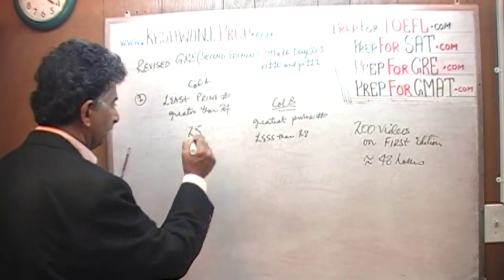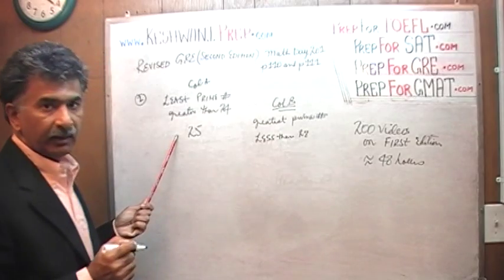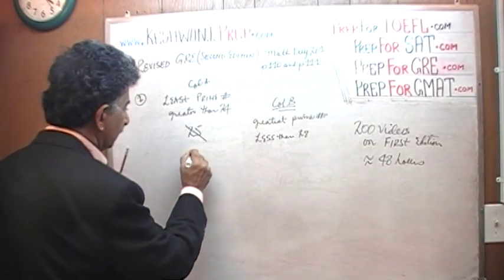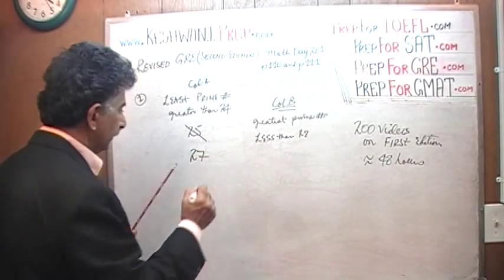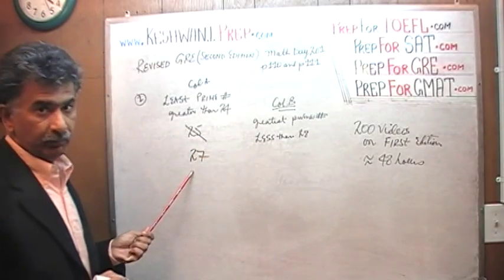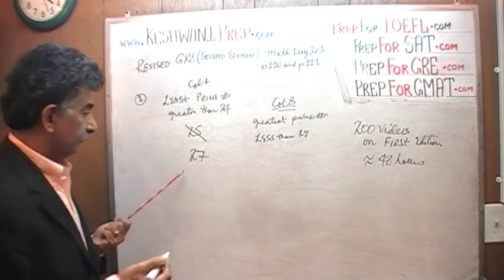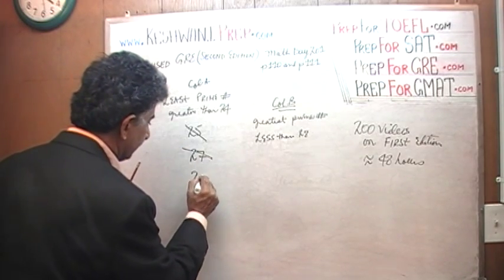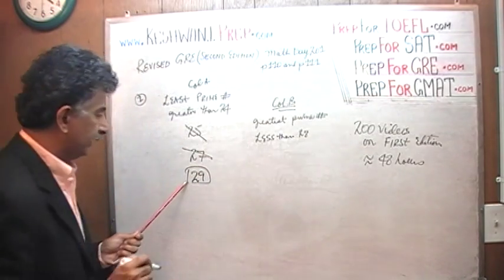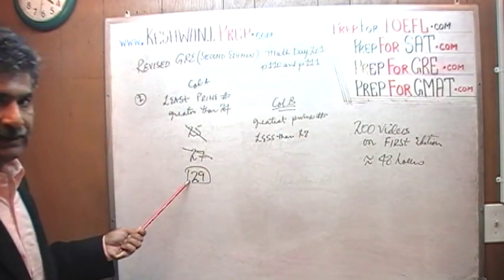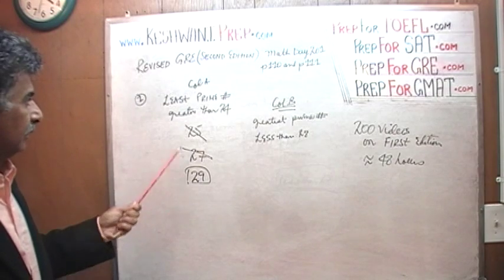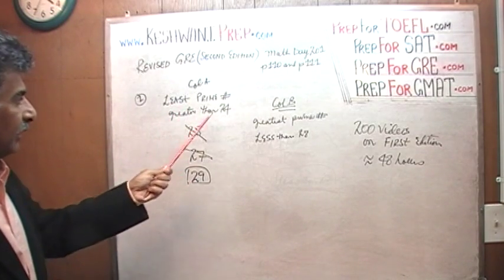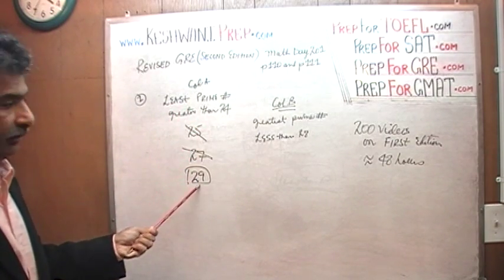25 is not a prime number — it is divisible by 5. 27 is divisible by 3, so it is not a prime number either. 29 is our prime number. 29 is the least prime number that is greater than 24.